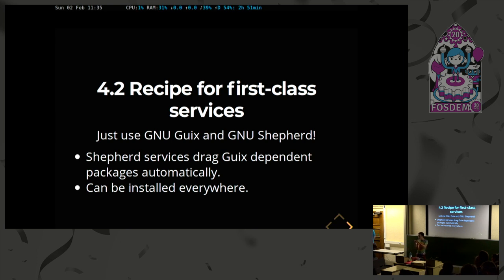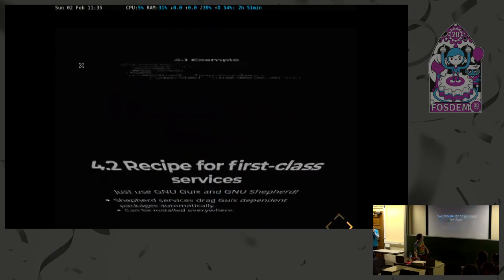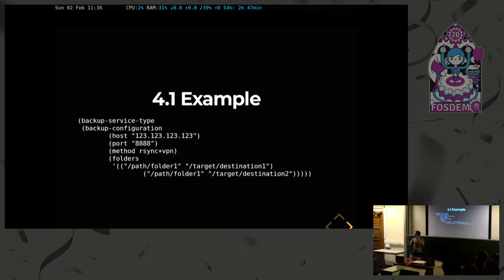What's also particularly interesting about Shepherd and Geeks is that they can be tied together in a way that when you declare a service in Shepherd, it will automatically pull in the required dependencies. So with my previous example, from my user dotfiles I can just put this service there — I don't have to install a VPN program or rsync. It will do it for me automatically. I don't have to care anymore about the implementation details, which are the underlying programs. I want to get the job done; I want to do the backup. That's really what I care about. The rest is just details.